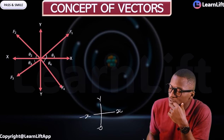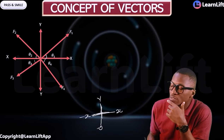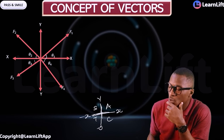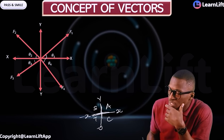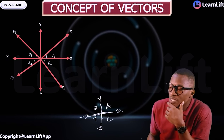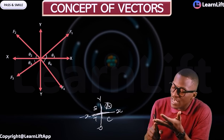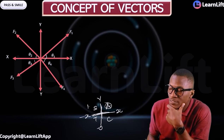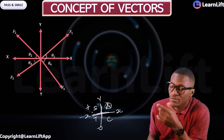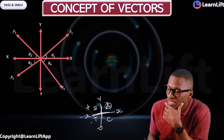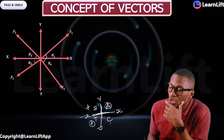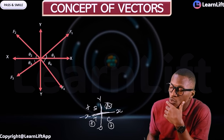Before we do that, remember this is a quadrant system. In trigonometry, the rule is 'All Students Take Calculus': in the first quadrant, all (sine, cosine, tan) are positive; in the second, only sine is positive; in the third, only tan is positive; in the fourth, only cosine is positive.